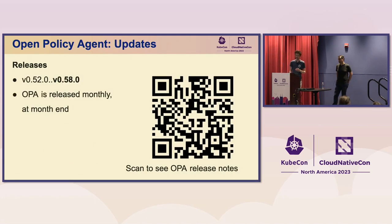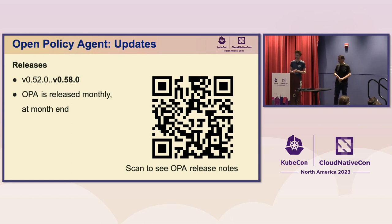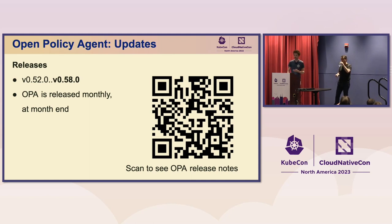We release OPA once a month at the end of the month. I last gave a maintainer update in Amsterdam when we were on 0.52; we're now on 0.58. I'm going to give a summary of the updates since that point, including one update that happened before which the North American audience may have missed.